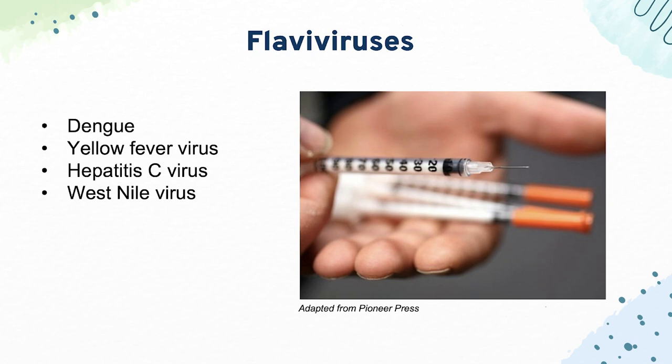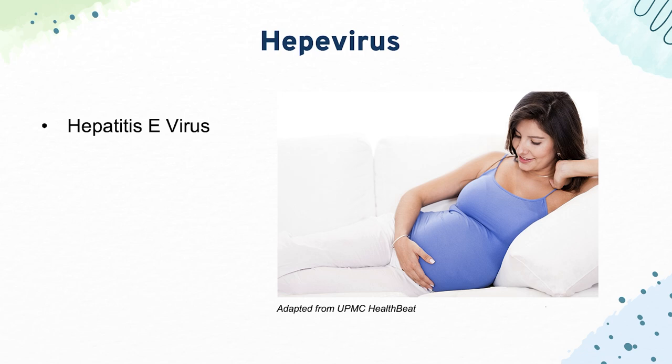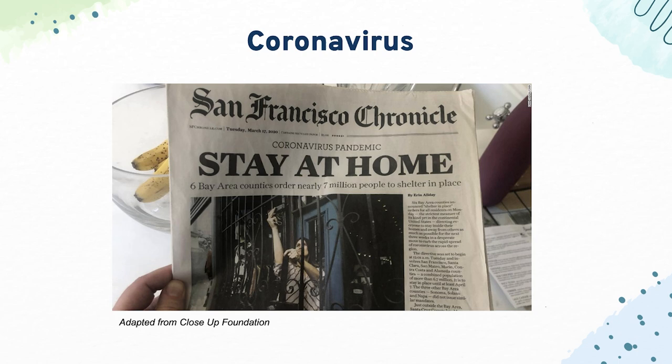Finally, we have West Nile virus, which causes meningoencephalitis and flaccid paralysis in patients bitten by a mosquito. Then we have caliciviruses, like Norwalk virus, which causes diarrhea and GI illness — often in cruise ships or preschools. Then hepatitis E virus, which causes a very fulminant hepatitis in pregnant patients. Coronavirus can cause a SARS-like disease and has been the subject of the most recent pandemic.